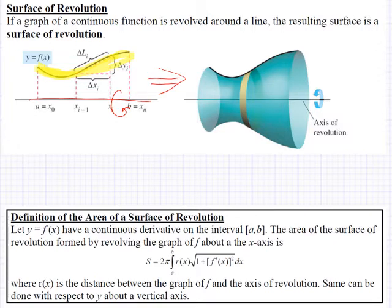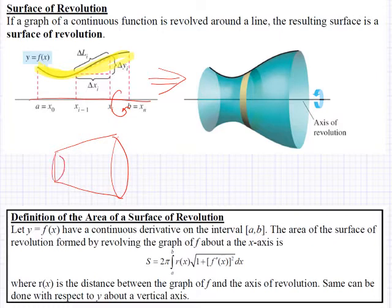If I look at a frustum of a cone, it looks like this. It's not a full cone in that it doesn't have the point of the cone. We just cut that off and look at — again, this is called a frustum of a cone. And we look at finding the area of that frustum.